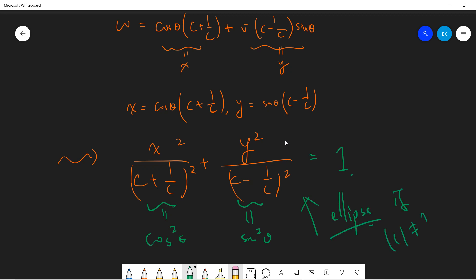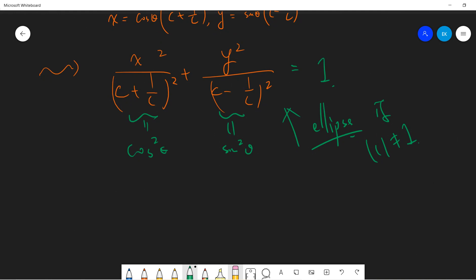If c is not 0. Right. If c is not 1. Right. If c is not 1, then c minus 1 over c will not be 0. OK, so the standard result is that this guy will make a circle become an ellipse. OK, so this is c not equal to 1.